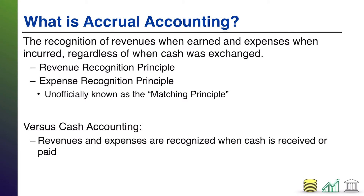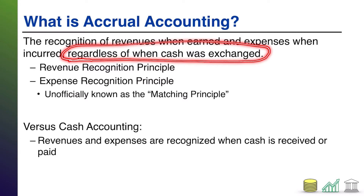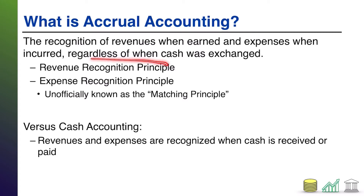If we wanted to sum up accrual accounting in a nutshell: accrual accounting is the recognition of revenues when they are earned — or when the obligation has been fulfilled — and expenses when they are incurred, meaning when did the cost actually take place, when did the business lose value as a result of this thing that was done. And notice this key part: regardless of when cash is exchanged. In an accrual accounting world, we don't care when cash changes hands from a standpoint of revenue and expense — an income statement standpoint.